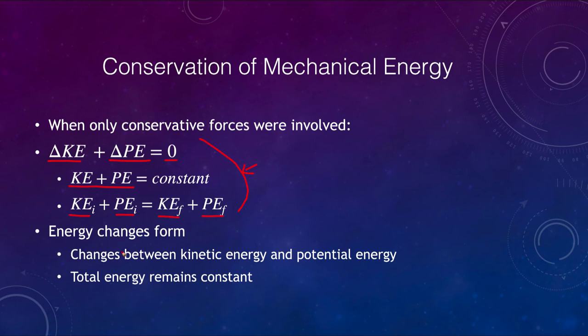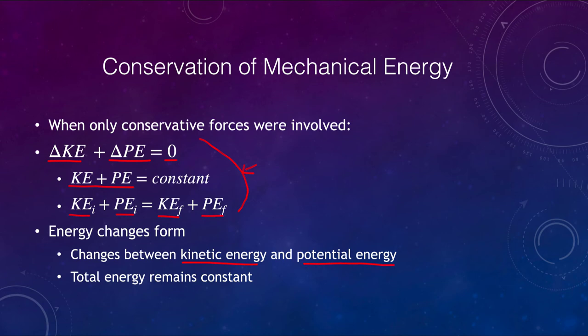Energy can change form — it very easily changes from kinetic to potential energy — but the total energy always remains constant. When looking at only conservative forces, the total energy will never change and energy cannot be lost. When we have non-conservative forces such as friction, energy can be dissipated and lost from the system — it may be turned into heat. That portion can no longer convert between kinetic and potential energy.